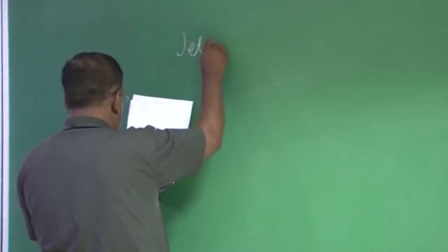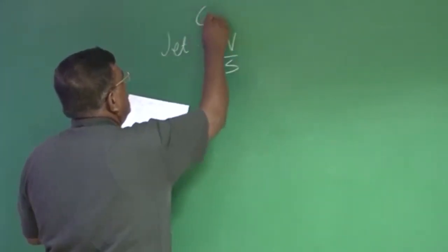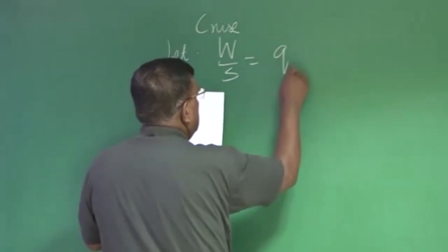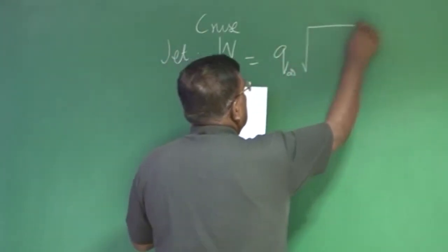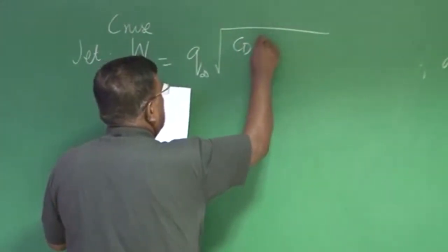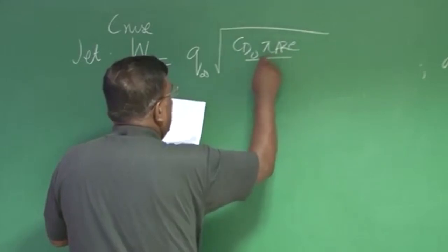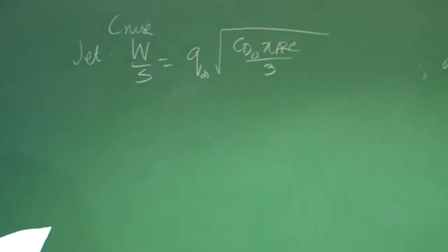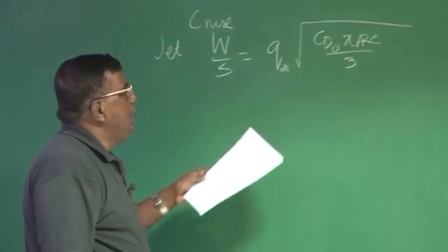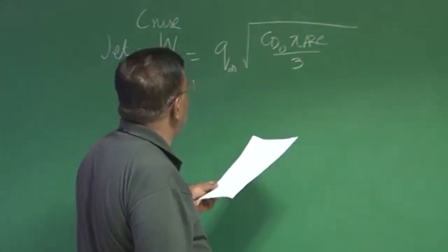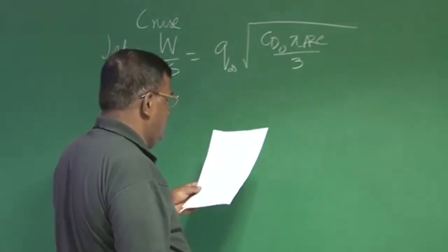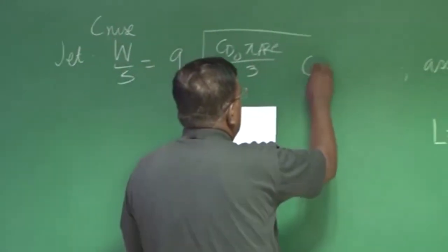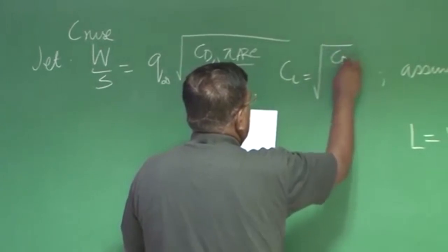Similarly for a jet, W/S for cruise: this we have derived, and it comes to Q_infinity × sqrt(CD0 × pi × AR × E / 3). Typically when talking about a jet, you would expect the speed to be higher. When doing a jet-driven aircraft looking for cruise-based W/S, the CL here is sqrt(CD0 / (3K)).